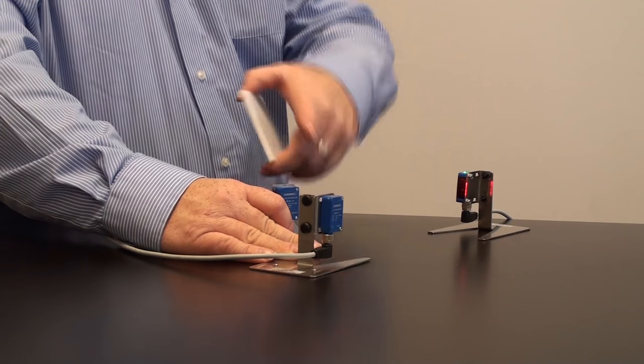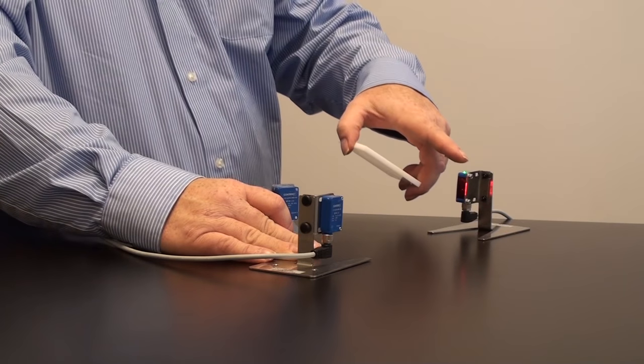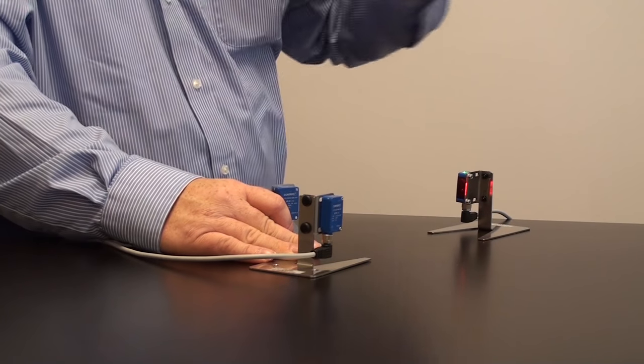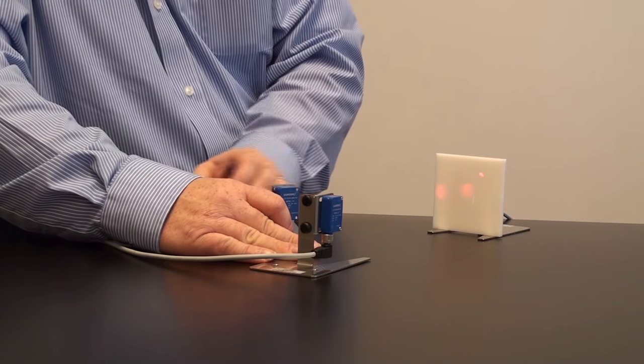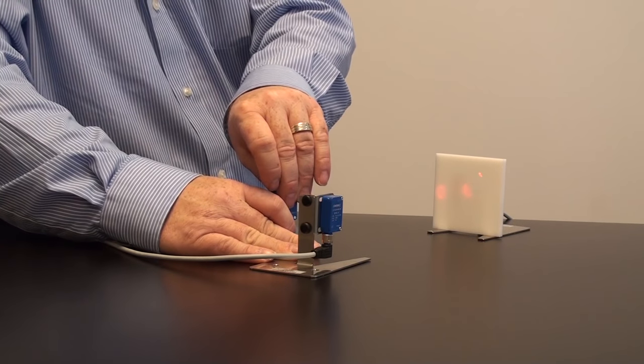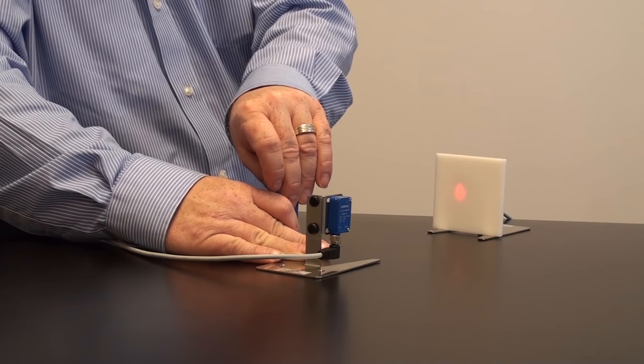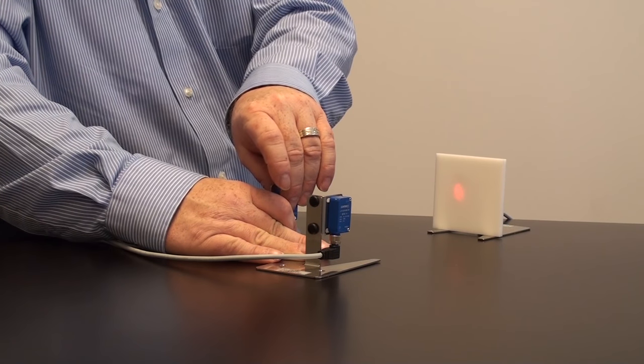These are our through beam sensors. These are emitters and a receiver. These are the exact same emitters. I want to show you the light spots aimed at the receivers. They're both at the same place.